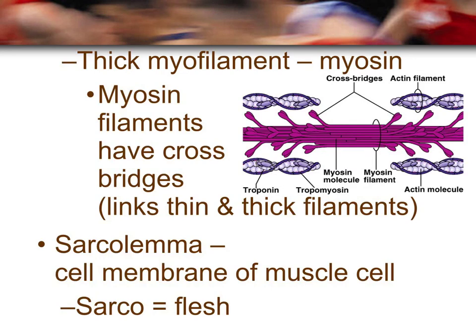Myosin is much thicker because it contains a structure called the crossbridge, which is important in hooking up with the actin filament during muscle contraction.